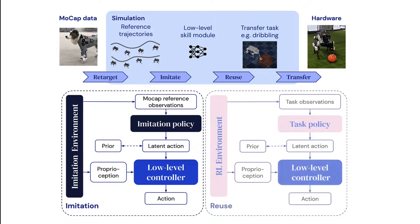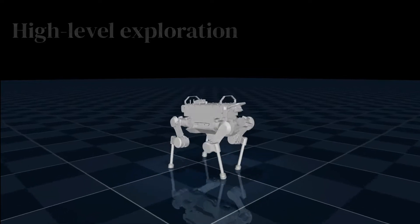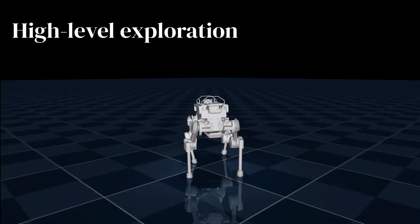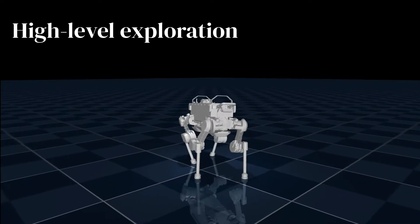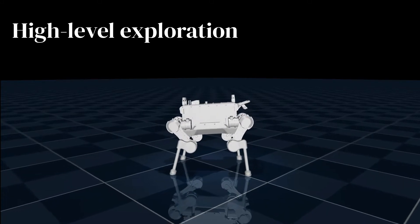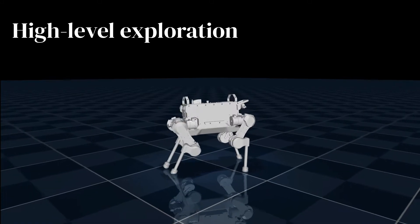In the reuse phase, we replace the imitation policy with a new task-specific policy that is trained directly in the latent action space, while keeping the low level fixed. When exploring in the high level latent action space, the robot maintains balance and shows temporally extended behavior such as walking and turning.